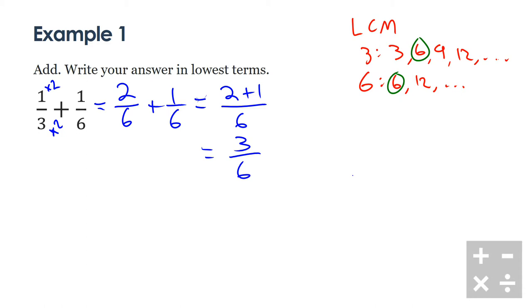And I need to be checking for lowest terms, which I am not. 3 and 6. Pretty quick to identify that our greatest common factor is 3. I'm going to divide the top by 3. I'm going to divide the bottom by 3. And I'm going to get 1 over 2. And this would be my final answer in this case.